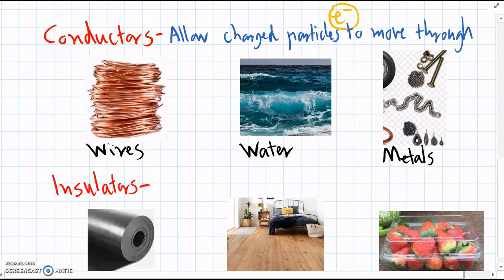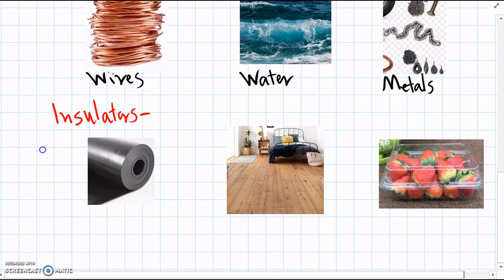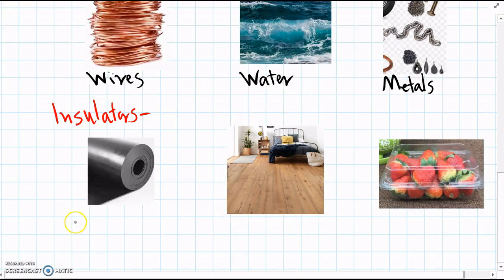If we think of insulation in general, it keeps things in. It can keep heat in, and it can keep electricity in as well. So these types of materials are really good at stopping electrons moving through them.